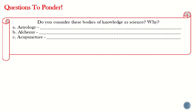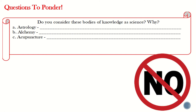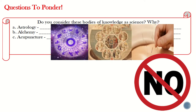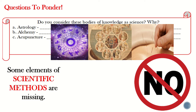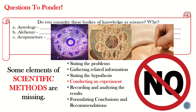Second essential question: do you consider astrology, alchemy, and acupuncture as science? The answer is no. Astrology gives predictions out of patterns of stars — we call them a pseudo-science because they associate certain behaviors or predict events based on star patterns. However, they are not considered science because some elements of the scientific method are missing, specifically the conduct of experiments. For alchemy, the belief that everything can be converted into gold is also not science, because gold is a distinct element with its own atomic mass, atomic weight, and exclusive properties.